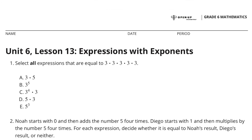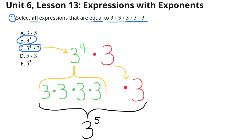Unit 6 Lesson 13: Expressions with Exponents. Number 1: Select all expressions that are equal to 3 times 3 times 3 times 3 times 3. B would be equal because that's 3 to the 5th power.